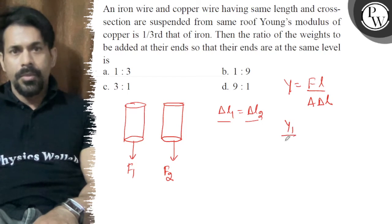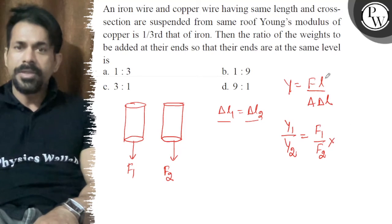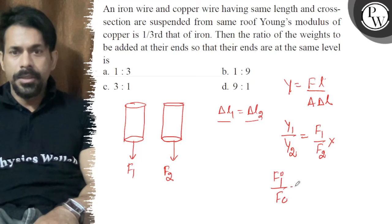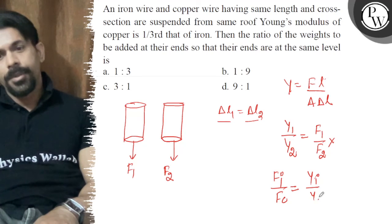So Y1 upon Y2 is equal to F1 upon F2. F of iron upon F of copper is equal to Y of iron upon Y of copper.